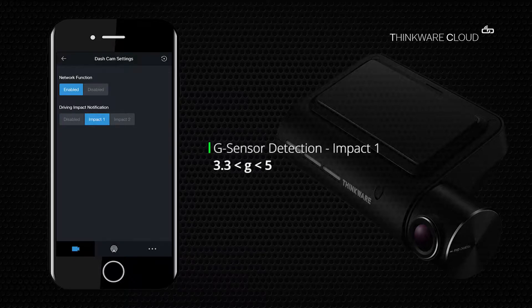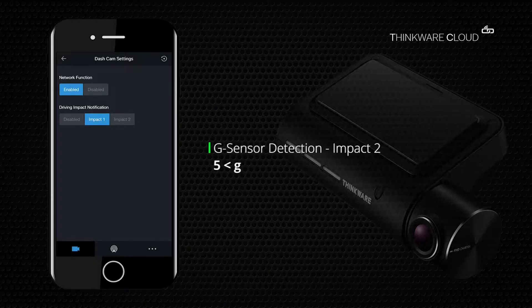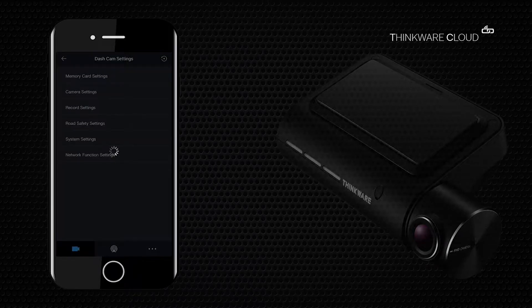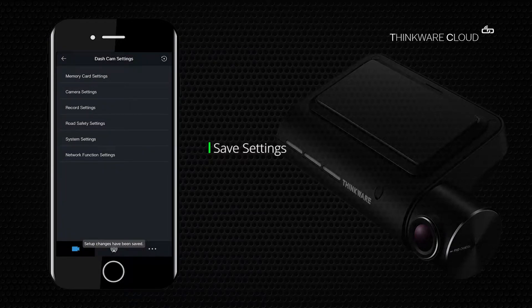Impact one will give you a notification when the G sensor detects the acceleration range of 3.3G to 5G. When it detects an impact of more than 5G under the impact two setting, the dashcam will give you a notification. Click on the back arrow located at the top left corner to save your settings.